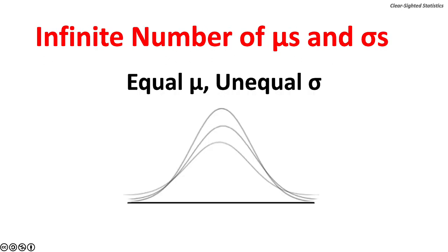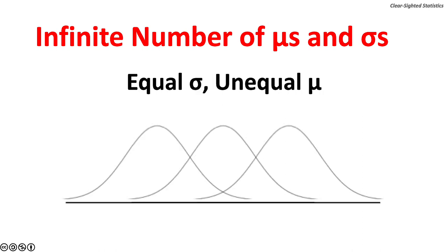Here are three normal distributions with equal population means but unequal standard deviations. The larger the standard deviation, the wider the curve. The smallest possible standard deviation is zero, which would mean all variables are equal. The curve in that case would be a vertical straight line. Here are three normal distributions with equal standard deviations but unequal means.